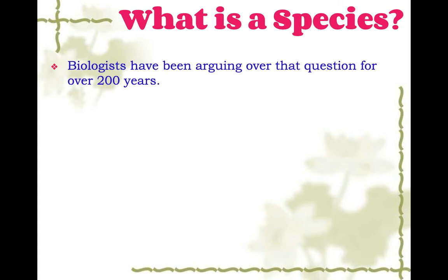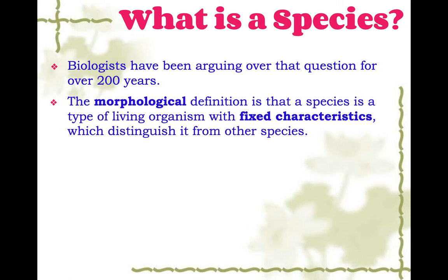Biologists have actually been arguing over this for over 200 years, and I'm still not sure they've decided, but there are a few different definitions. The first one is the morphological definition, and this is that a species is a type of living organism with fixed characteristics which distinguish it from other species. So basically, if you look alike, you're part of the same species.